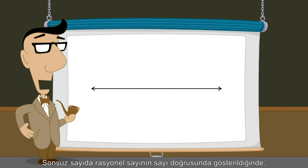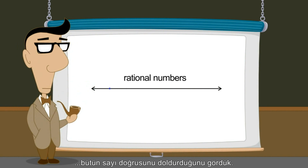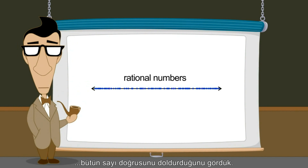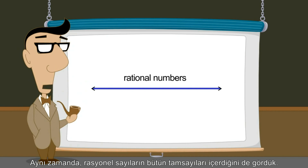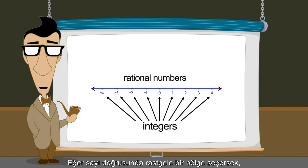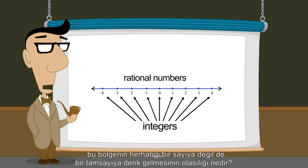We have seen that there are an infinite number of rational numbers, and when represented on the number line, the points appear to fill the entire line. We have also seen that the rational numbers include all the integers. So if we pick some random location on the number line, what are the chances that this location will correspond to an integer, as opposed to some other number?